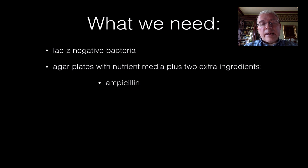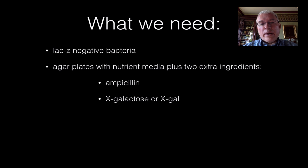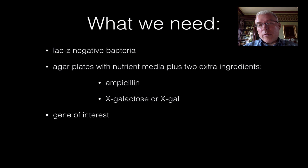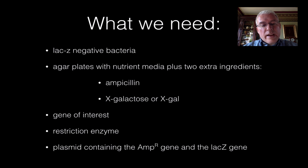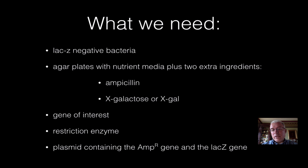We're going to add the antibiotic ampicillin, which normally kills bacteria, and we're going to add an extra sugar called X-galactose — also known as X-gal — which produces a blue metabolite when the bacteria digest it. We're going to need our gene of interest from a human, for example the insulin gene. We'll need a restriction enzyme that can cut both the plasmid and the gene of interest, and we're going to need our plasmid — one that contains an ampicillin resistance gene and a gene called LAC-Z that gives the ability to digest lactose. So the plasmid is carrying two genes.